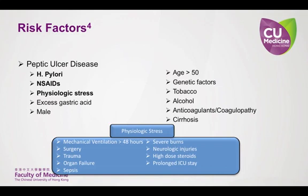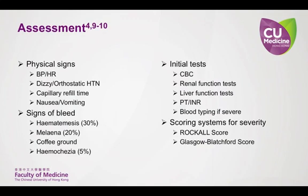Examples of physiologic stress include many items that can make the patient more susceptible to a GI bleed, especially when more than one occurs. The physical signs of the bleed are similar to those of a hypotensive patient: tachycardia, low blood pressure, dizziness, orthostatic hypotension, slow capillary refill time, and shortness of breath. Patients often show signs of bleeding like hematemesis or vomiting blood, melena or dark tarry stool, coffee ground-like emesis, or even hematochezia — bright red blood per rectum — if the upper GI bleed is brisk and significant.